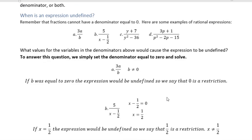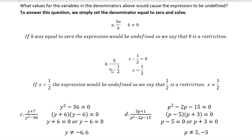In the second one, we're going to do the same thing. We set the denominator equal to zero. Our denominator was x minus one half. If I set x minus one half equal to zero, I get x equals one half. You can see if I plug it in, one half minus one half would be zero. So if x equals one half, the expression would be undefined, so we say that one half is a restriction. X cannot equal one half.